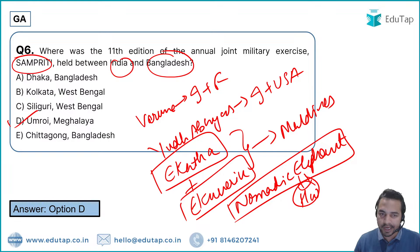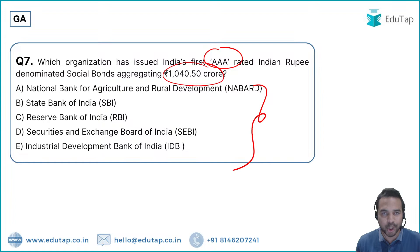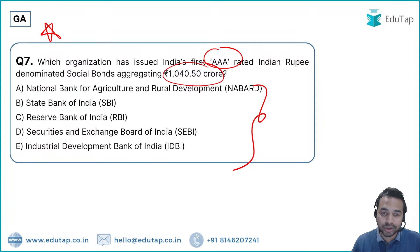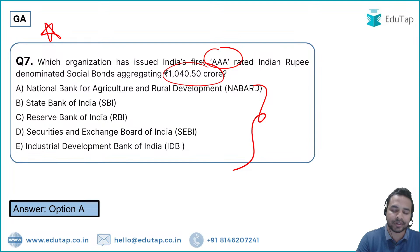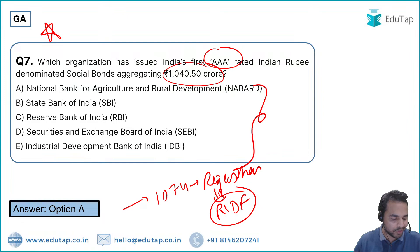Question 8: Which organization issued India's first AAA-rated Indian Rupee-denominated social bond aggregating ₹1040.5 crore? This is very important for NABARD Grade exam aspirants — the social bond was launched by NABARD itself. Additionally, NABARD also released ₹1074 crore to Rajasthan under RIDF — the Rural Infrastructure Development Fund.